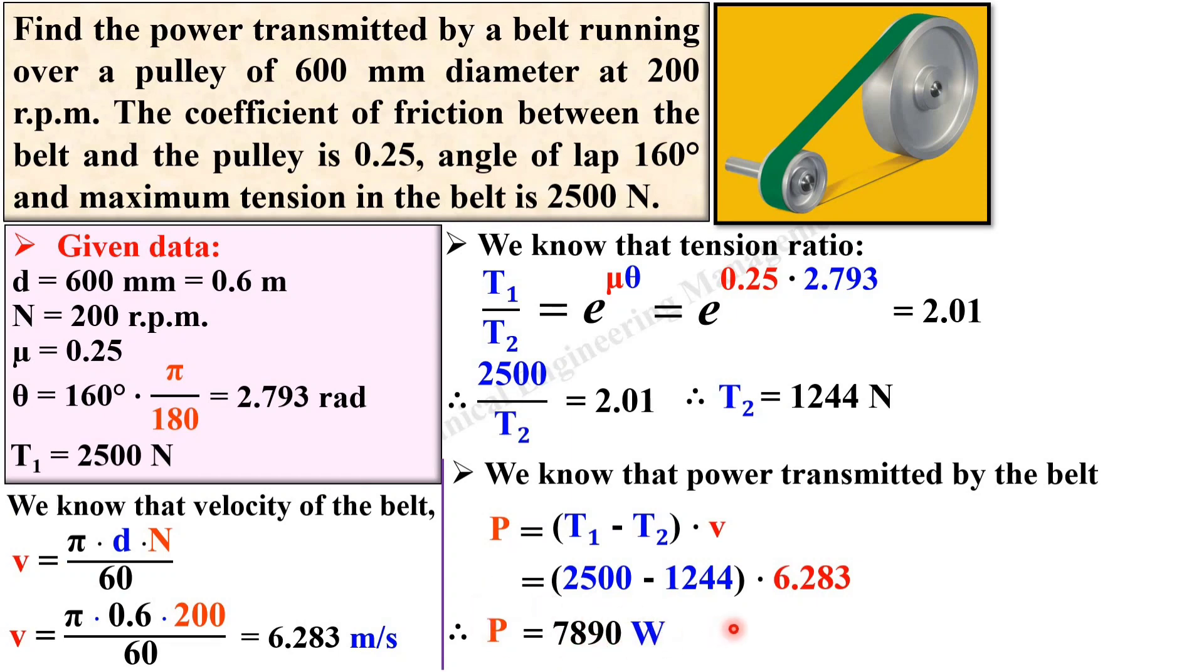Now keep in mind again, when you use this equation then T1 and T2 must be in Newton and velocity must be in meter per second. And at last you will get the answer P that must be in watt always. And this is your answer, find the power transmitted. So make a box. Now you can write over here as 7.89 kilowatt, because you know that by dividing 1000 then you can convert watt into kilowatt.